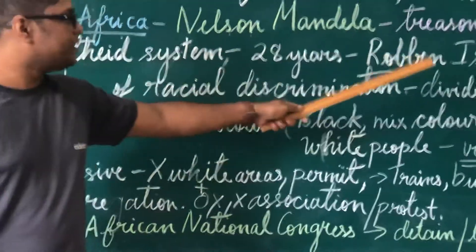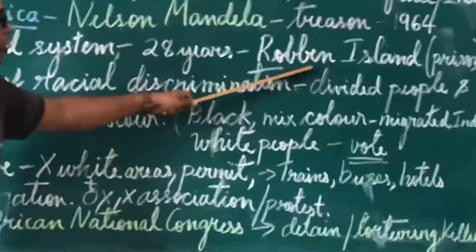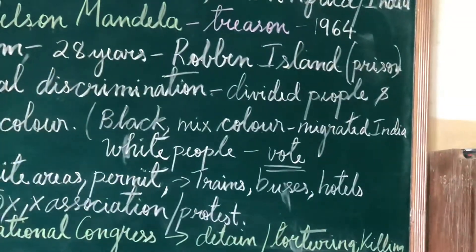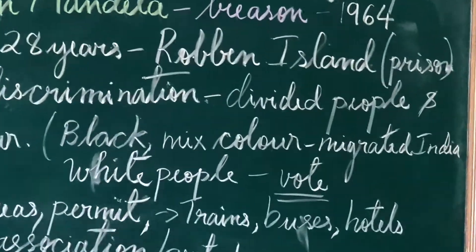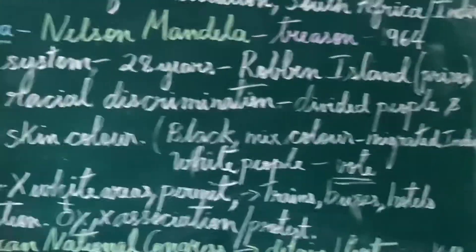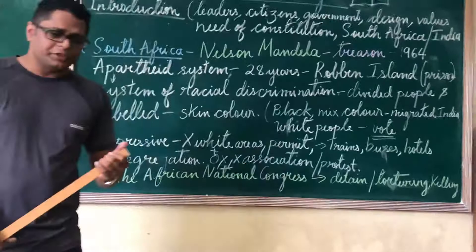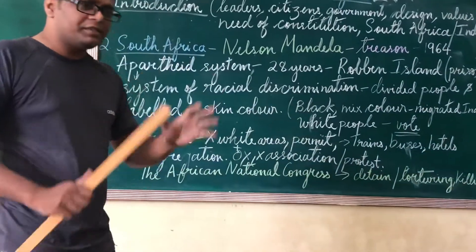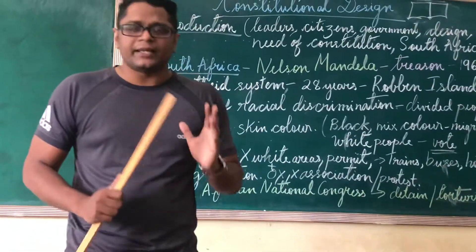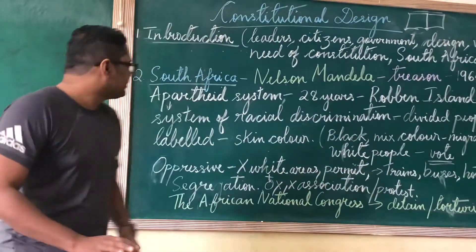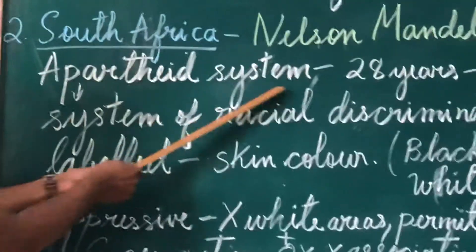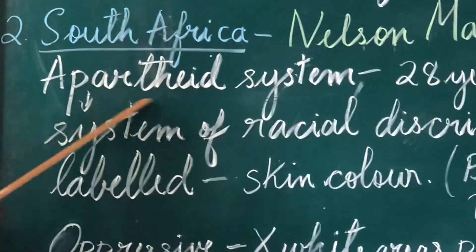He was kept at the famous prison called Robben Island, and he was there in prison for those long 28 years. Now let us look at why they were put into prison and what the condition in South Africa was.